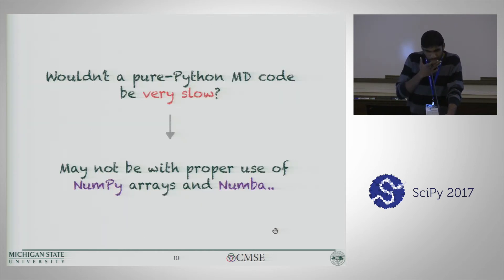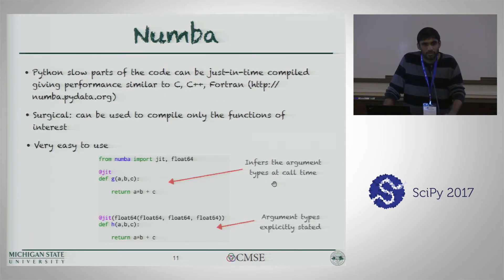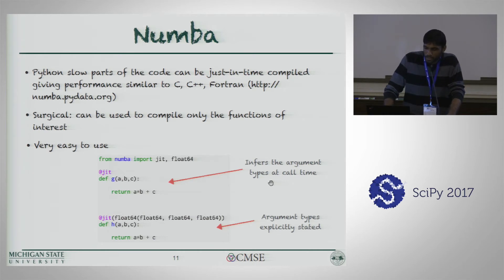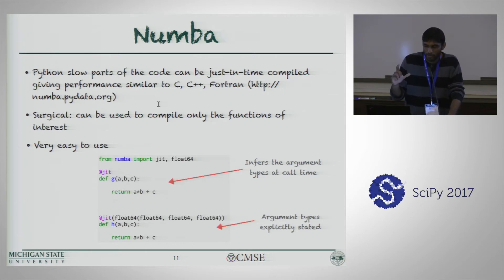The most interesting part of this project was the question: wouldn't a pure Python MD code be very slow? Well, maybe not with the proper use of NumPy arrays and Numba. Numba is a just-in-time compiler which compiles the slow parts of Python code so they can give performance similar to C or Fortran. What's amazing about Numba is it does this in a very surgical manner — you can choose just the parts of the functions that need to be as fast as C or Fortran, and simply add a decorator statement on top. So it's very easy to use.